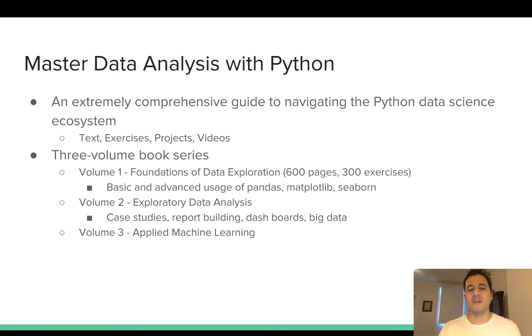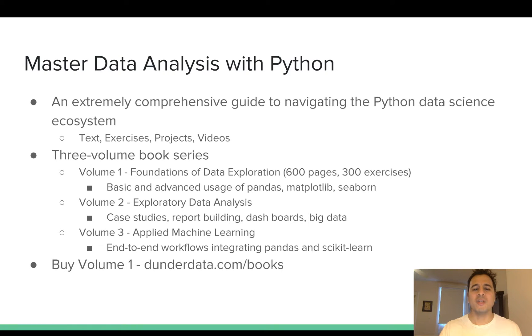Volume three is titled Applied Machine Learning. It's also not out yet and it's going to cover end-to-end workflows integrating Pandas and Scikit-learn. So to purchase volume one, you'll need to navigate to dunderdata.com slash books. And while you're there, you might want to pick up Exercise Python, which is a free book that covers the fundamentals of the Python programming language with many dozens of exercises for you to practice.